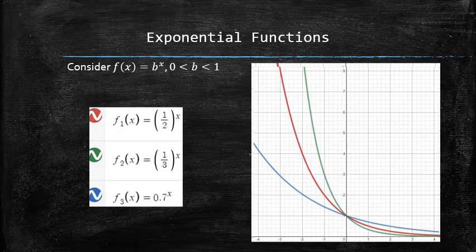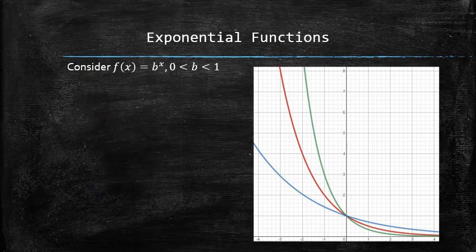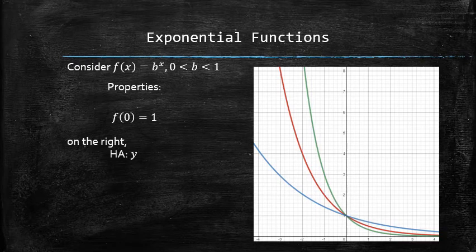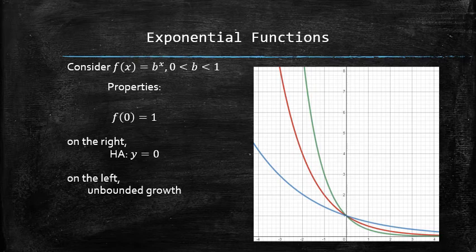We can easily graph a variety of functions with different bases that satisfy the criteria. We notice that all of them have some common properties. For example, the y-intercept is always 1. On the left, the graph goes up indefinitely. And on the right, the graph approaches the x-axis.